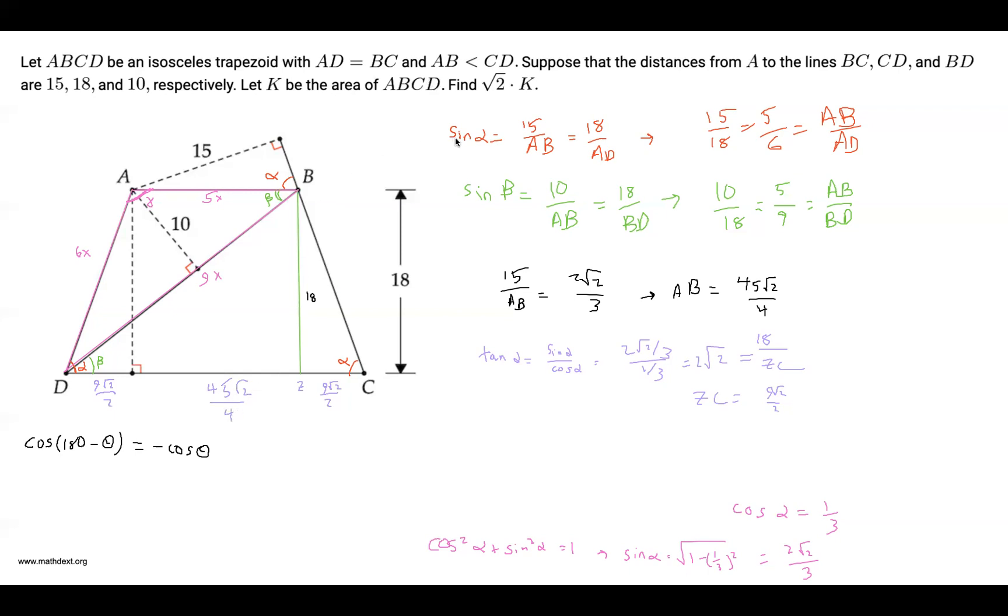Finally, we can calculate the area of our trapezoid, which is half the sum of the bases times height. And we know the height's 18 and we can find the sum of the bases, which is